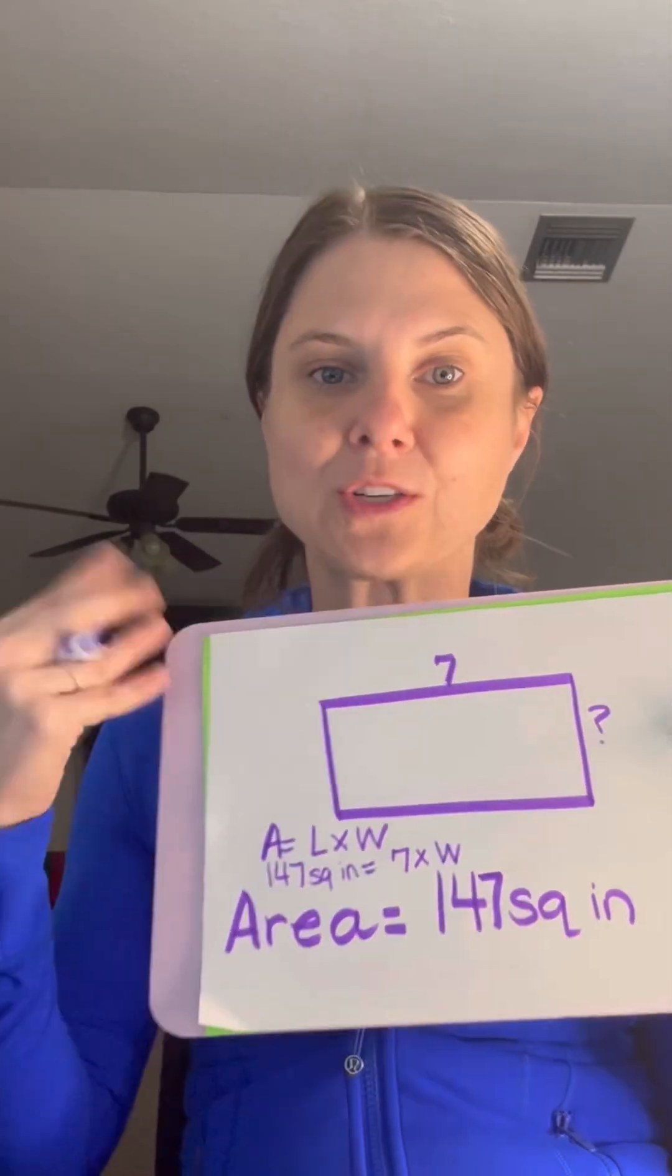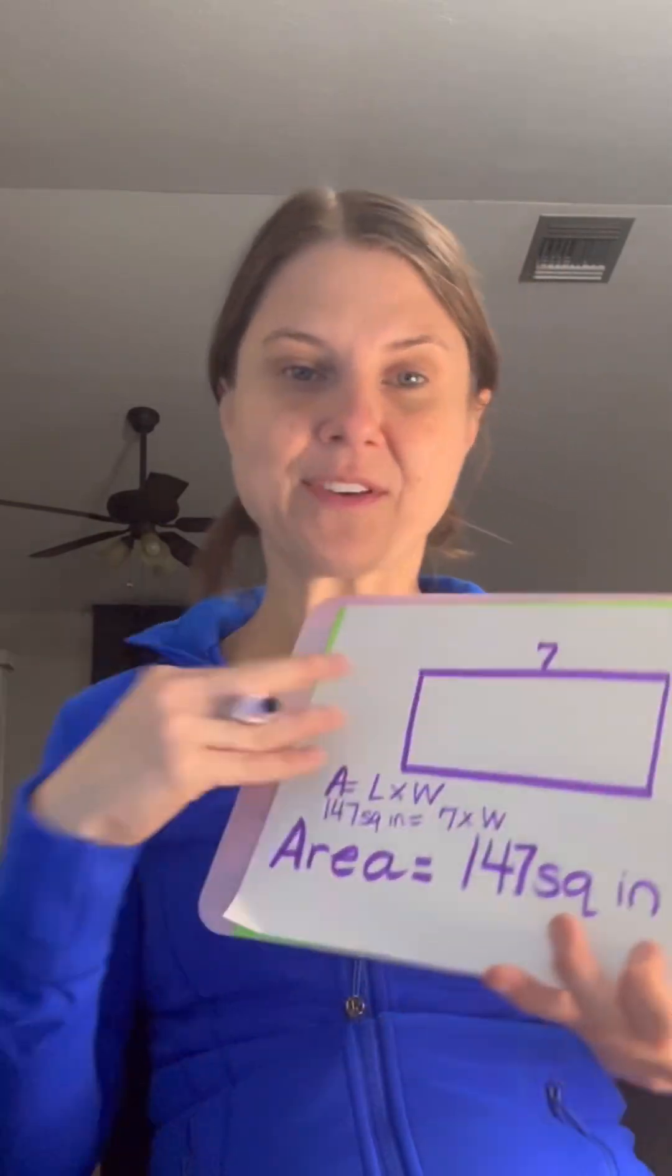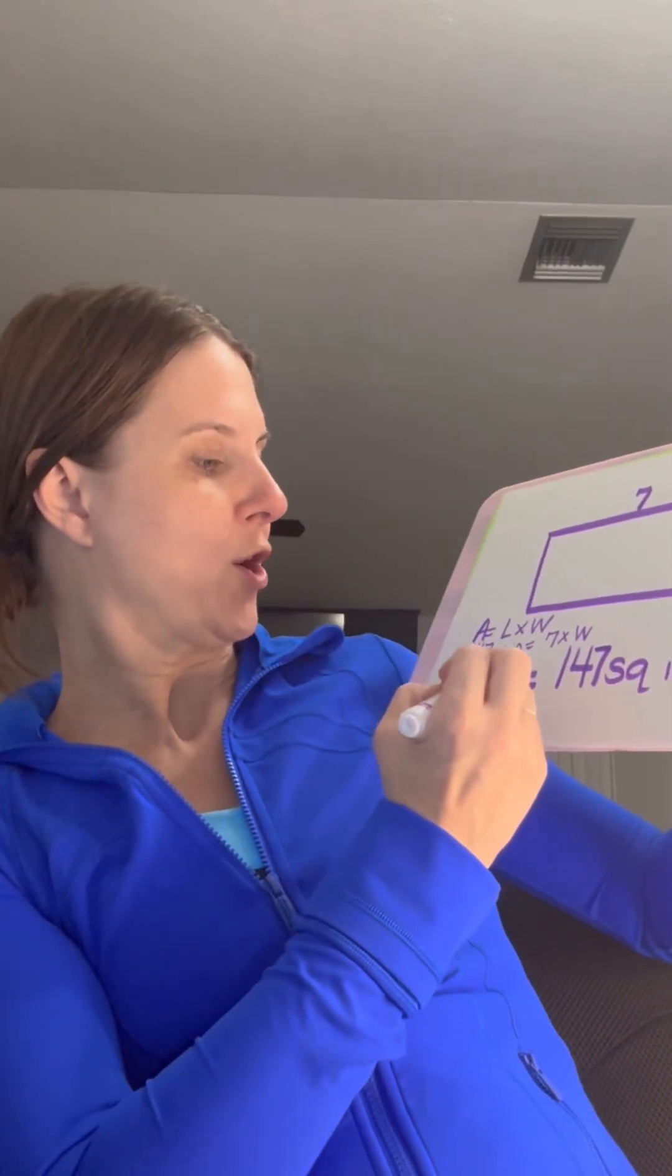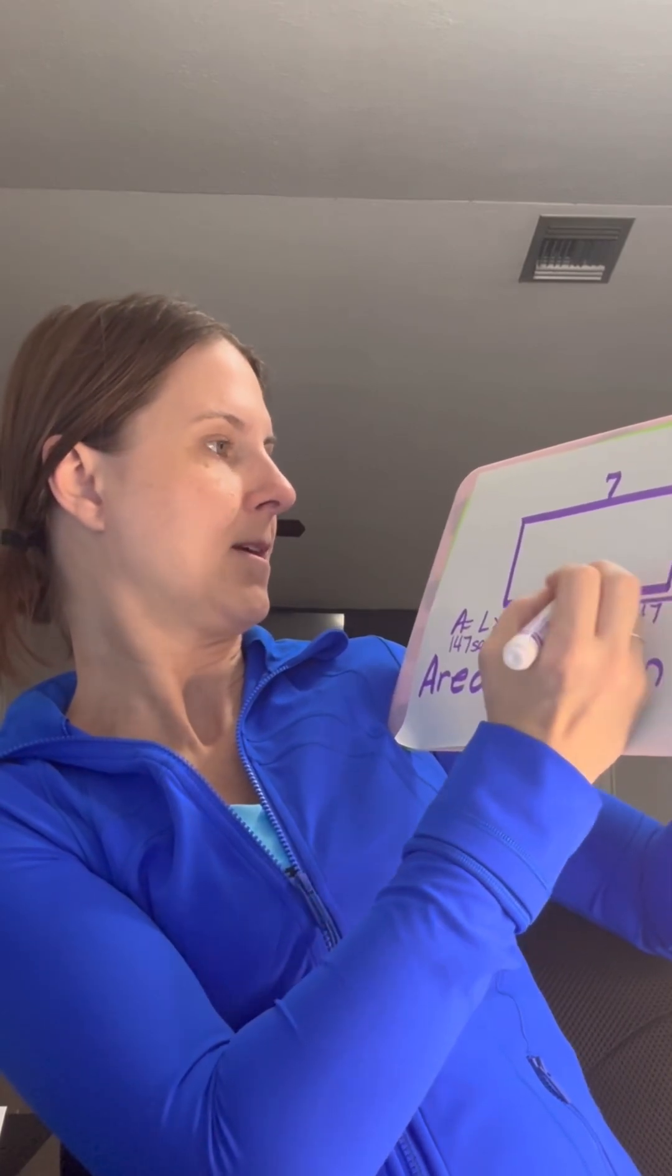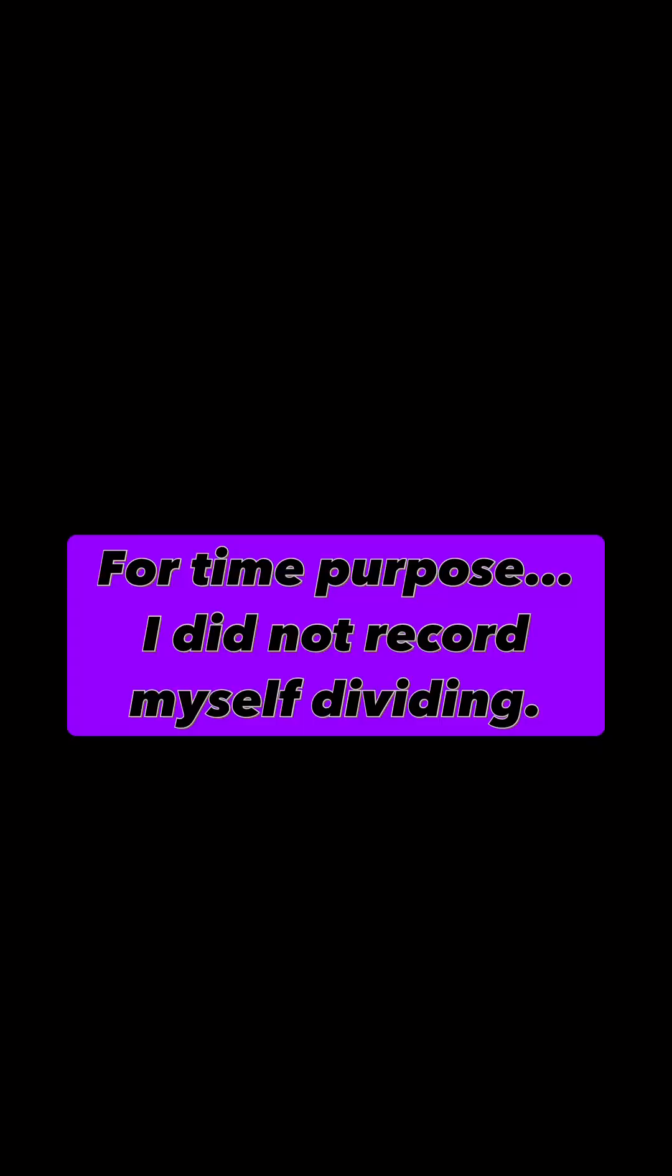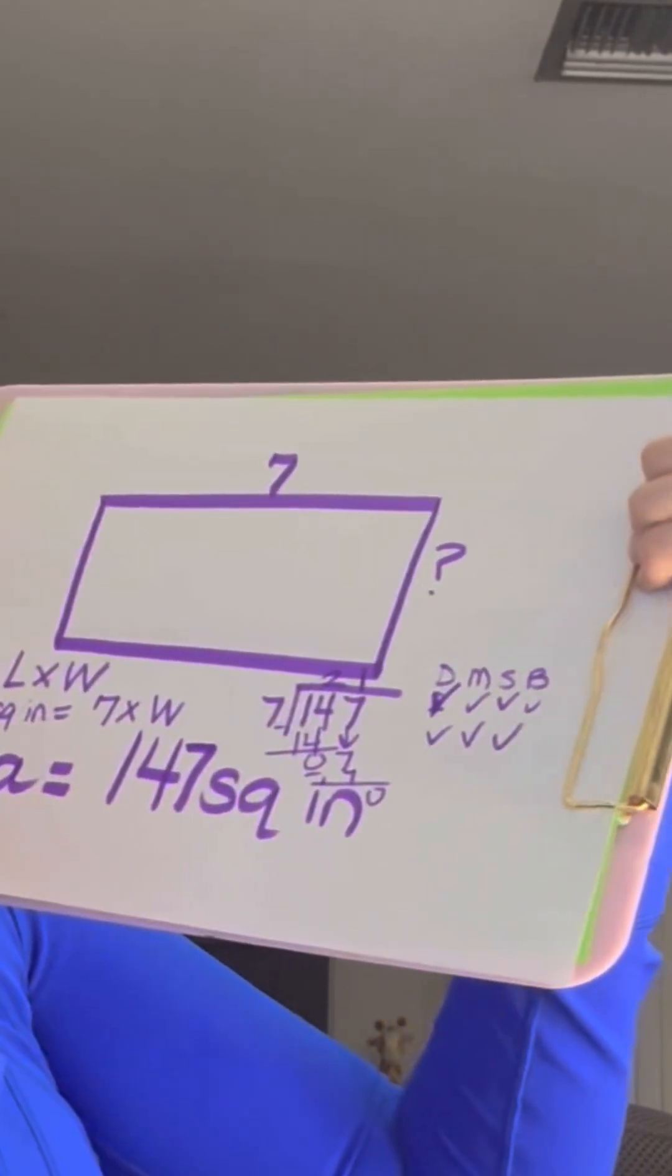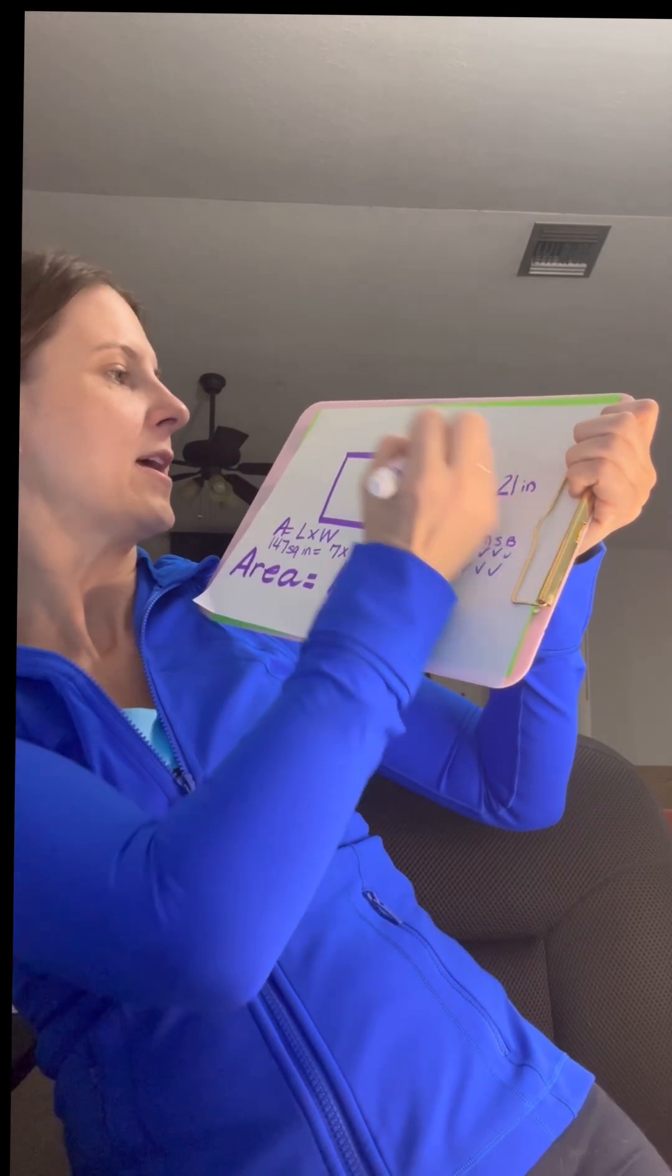So I taught my class how you do the inverse operation. The opposite of multiplication is division. Remember, we always use the biggest number first. So 147 divided by seven. You can just use long division. So 21 is our answer. The missing side is 21 inches.